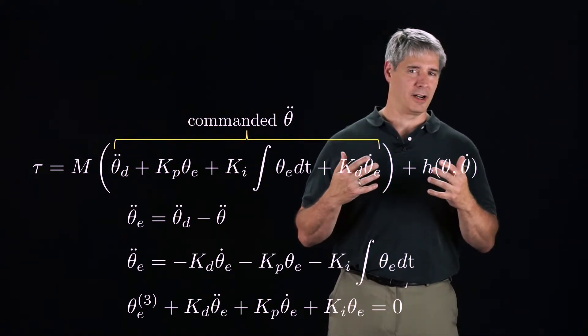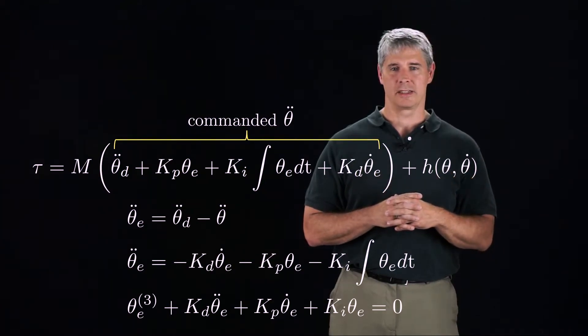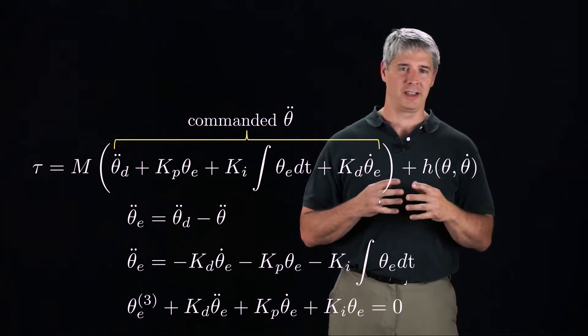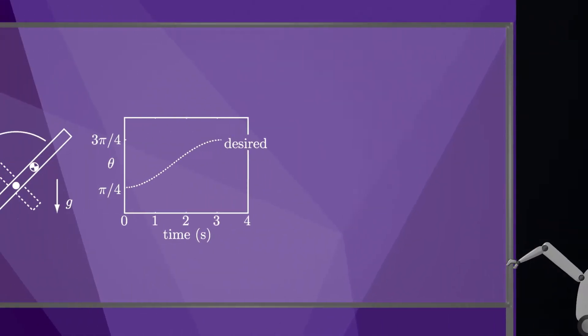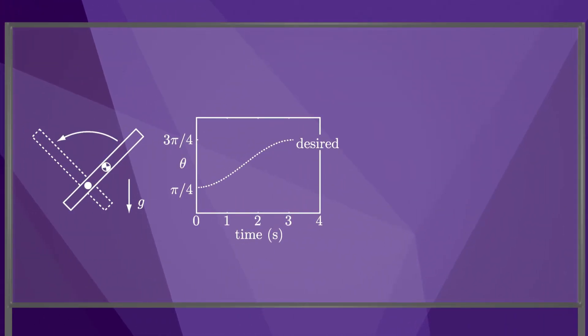This linear error dynamics applies along arbitrary trajectories of the robot, since the use of the dynamic model effectively linearizes the dynamics. Let's apply the computed torque controller to track the trajectory shown here. Our model of the dynamics is not perfect, as you can see from this simulation of the trajectory when using only feedforward control.